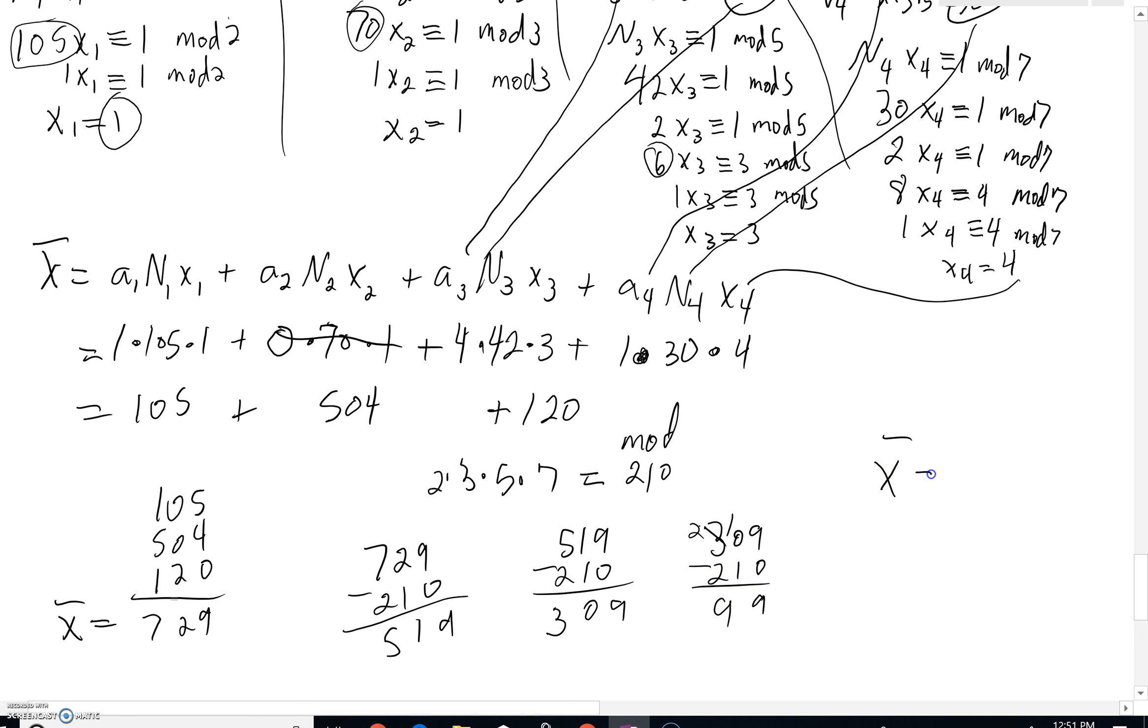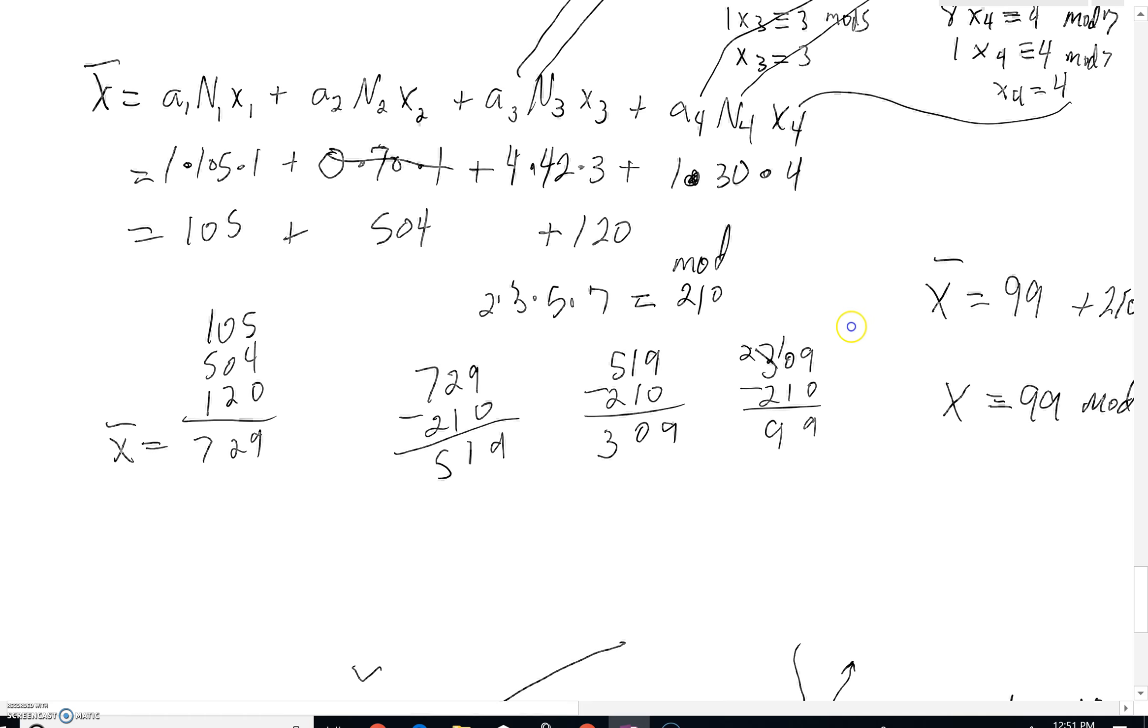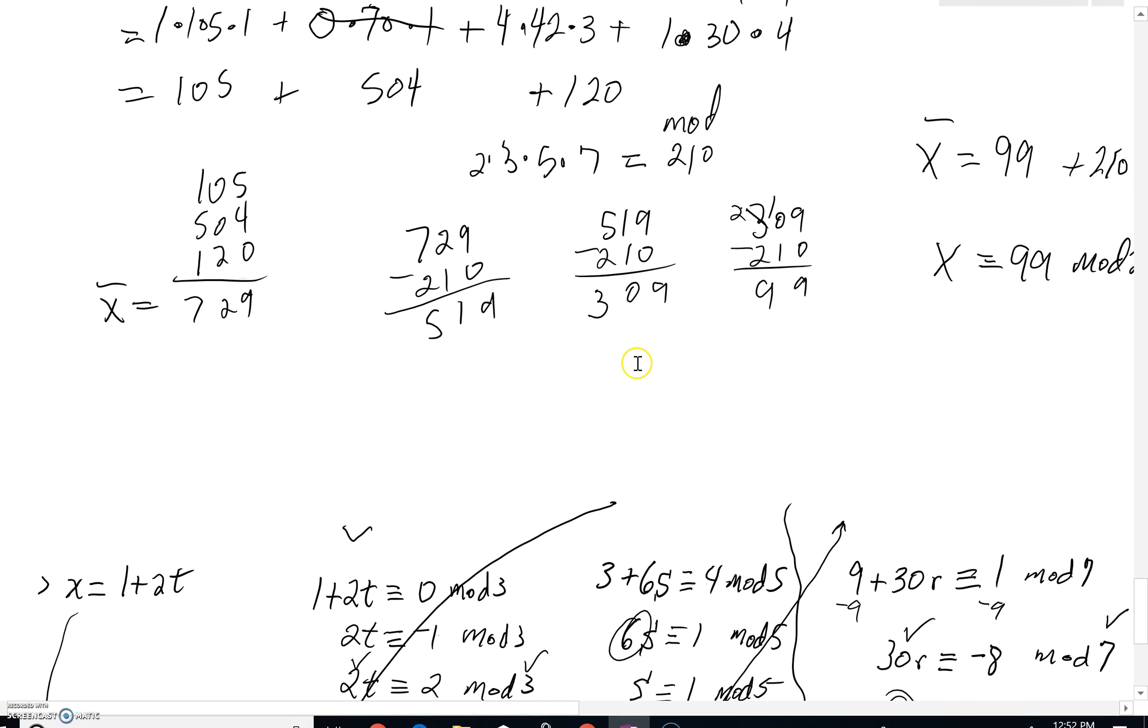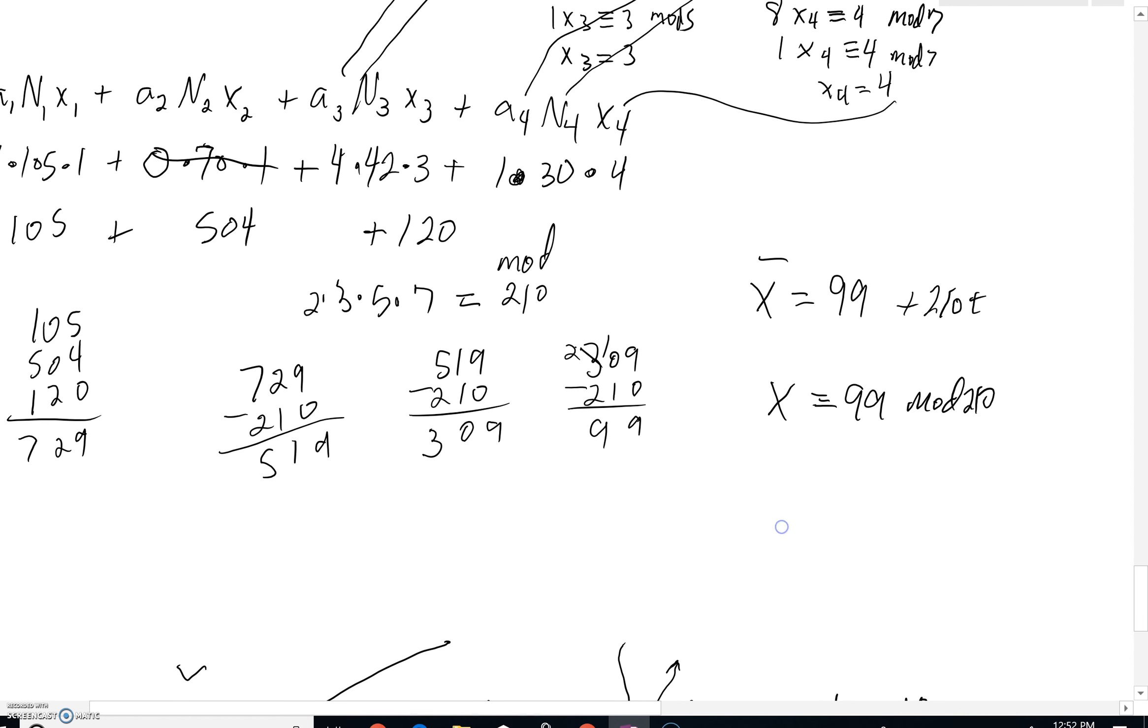Guys, that is, in fact, what you came up with with the other problem. We saw that it was 99 plus 210, some multiple of that. We could say x would be congruent to 99 mod 210. And that's what we came up with when we solved in that other capacity. Just wanted to let you know about that. The Chinese Remainder Theorem is going to work also.